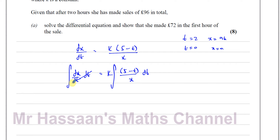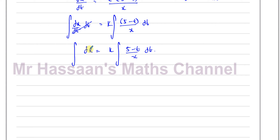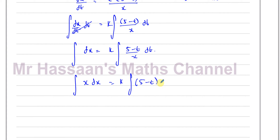What happens here is the dt's cancel out, so I'm left with the integral of dx on one side and k times the integral of (5 − t)/x dt on the other. I have to separate the variables: all the t terms must be on the right side, and all the x terms on the left. So multiplying both sides by x, I'll have x dx on the left, and integrate 5 − t with respect to t on the right. Now everything's in the right place and I can proceed.